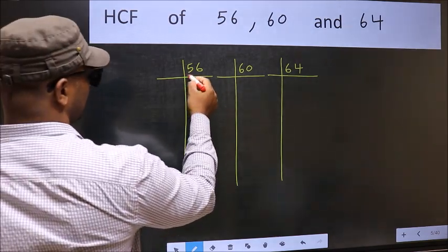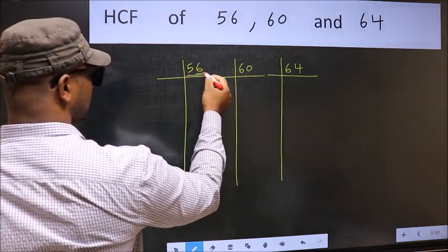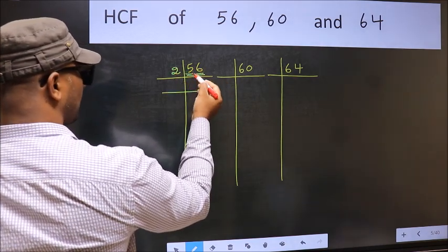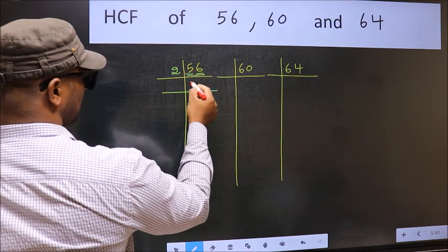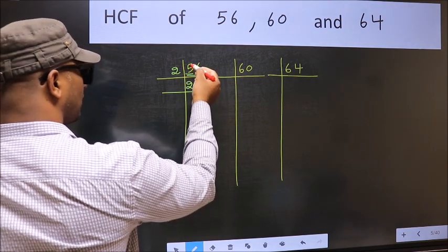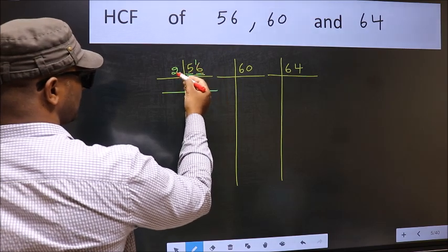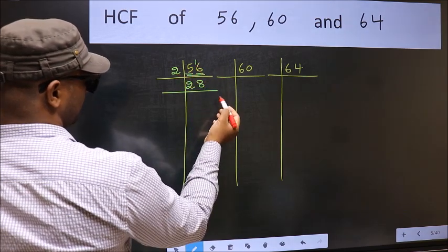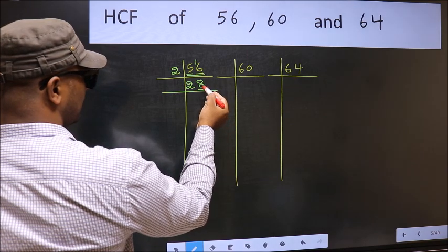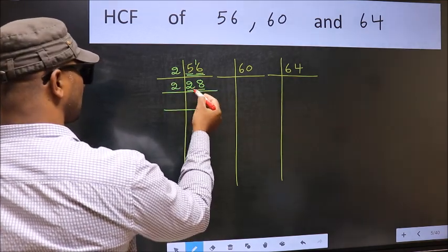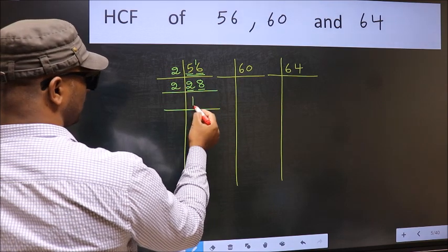Now here we have 56. Last digit 6, even, so take 2. First number 5. A number close to 5 in 2 table is 2 times 2 is 4. 5 minus 4 is 1, carried forward 16. When do we get 16 in 2 table? 2 times 8 is 16. Now last digit 8, even, so take 2. First number 2. When do we get 2 in 2 table? 2 times 1 is 2.